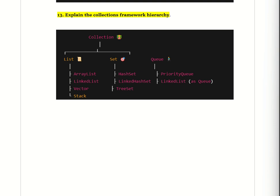The Collection Framework helps us manage data efficiently using List, Set, and Queue interfaces, each with different implementations. Now moving to the next question: the difference between HashTable and HashSet.